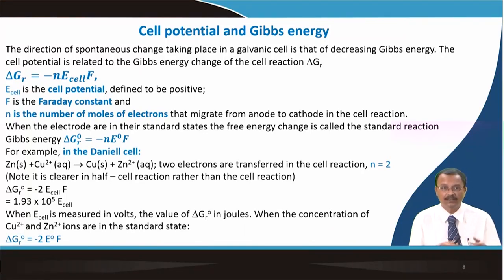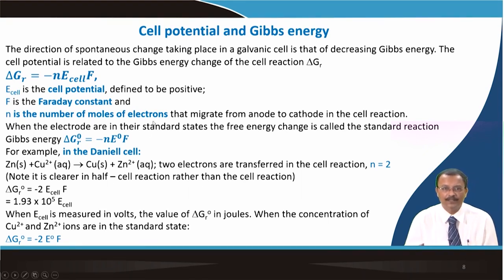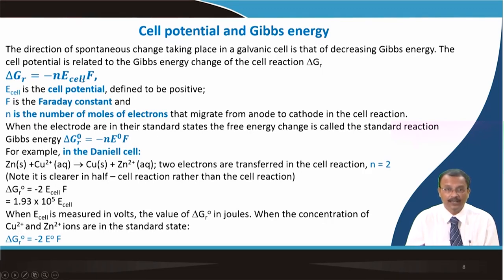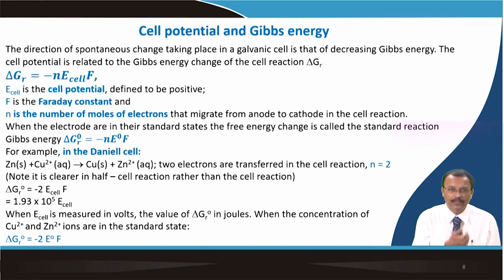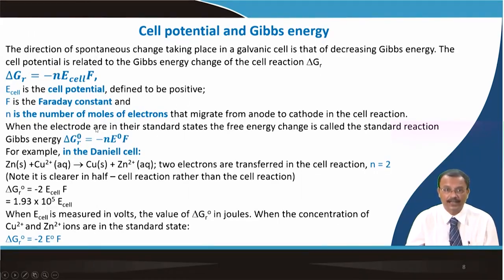The cell potential is related to Gibbs energy: ΔG = −nEcellF, where Ecell is the cell potential (defined to be positive), F is the Faraday constant, and n is the number of moles of electrons migrating from anode to cathode. When electrodes are in their standard state, the free energy change is called the standard reaction Gibbs energy, ΔG°. In the Daniel cell, two electrons are transferred, so n = 2, and ΔGr = −2·Ecell·F.